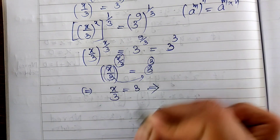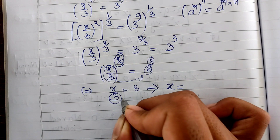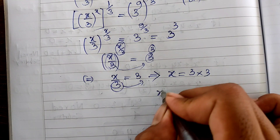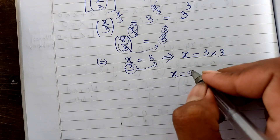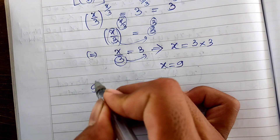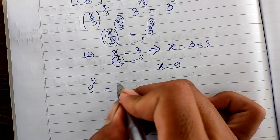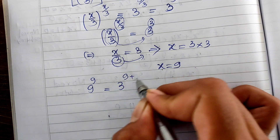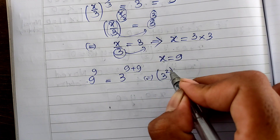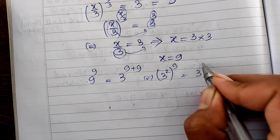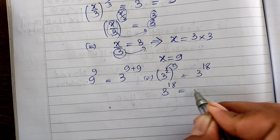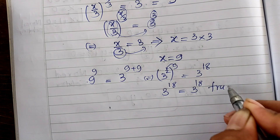From H divided by 3 equals 3, we move the 3 from the left to the right and get H equals 3 multiplied by 3, so H equals 9. Now let me verify: substituting H equals 9 into the equation gives 9 power 9 equals 3 power 9 plus 9. This is 3 squared power 9 equals 3 power 18, and 3 power 18 equals 3 power 18 — true!